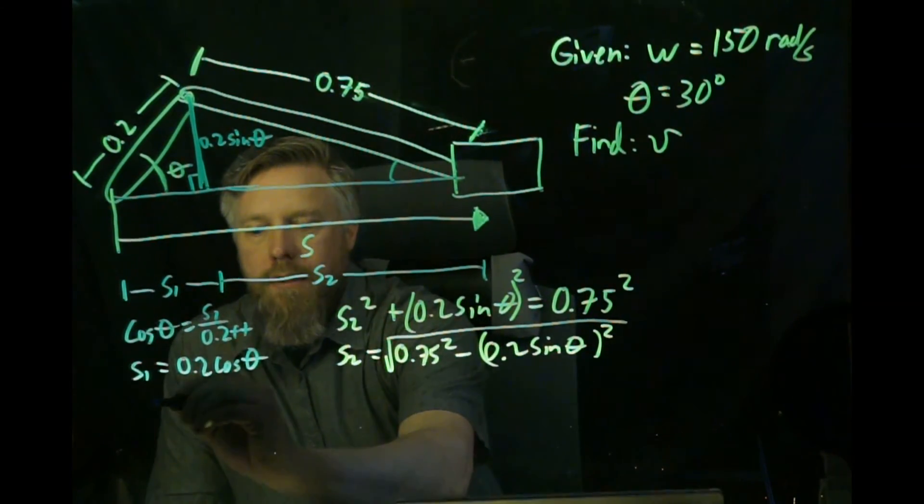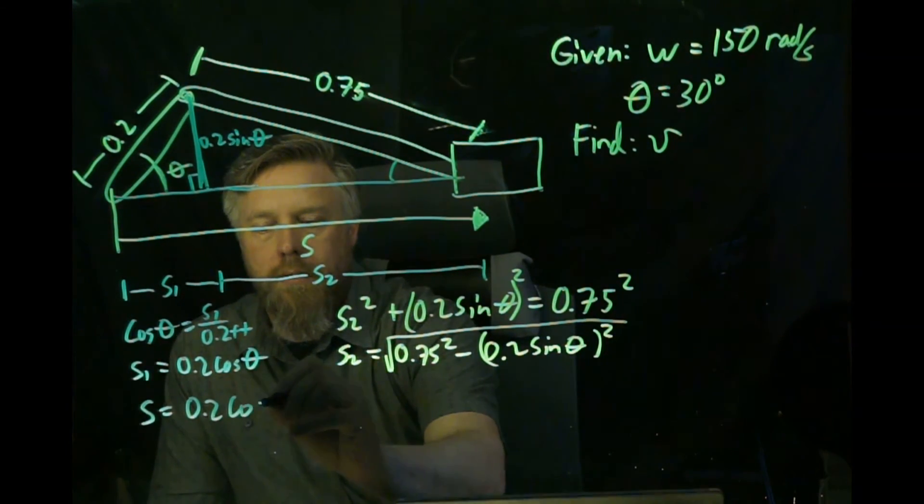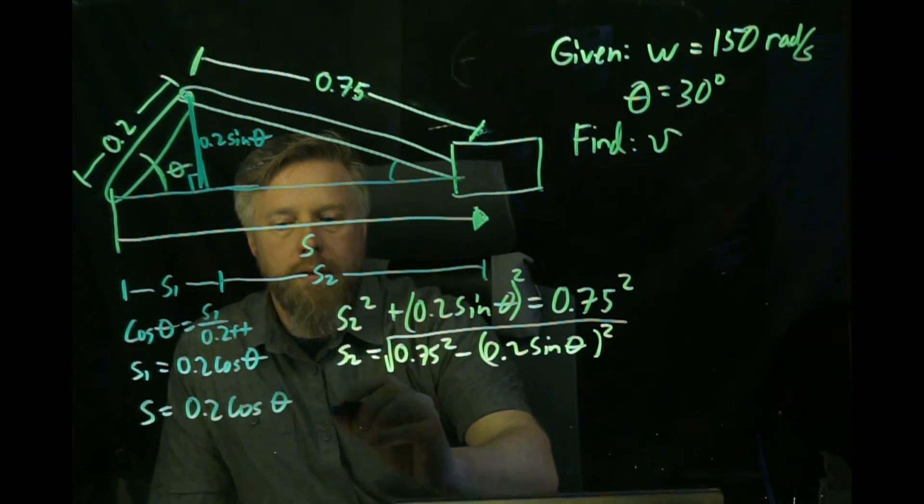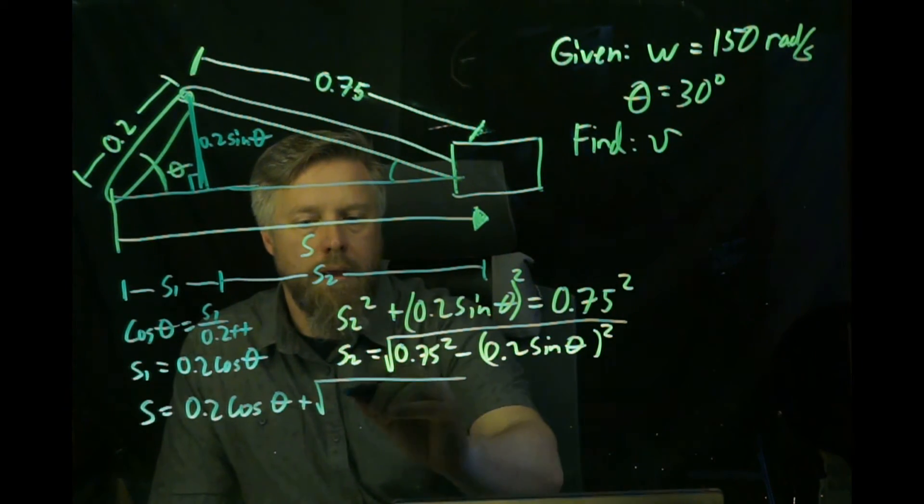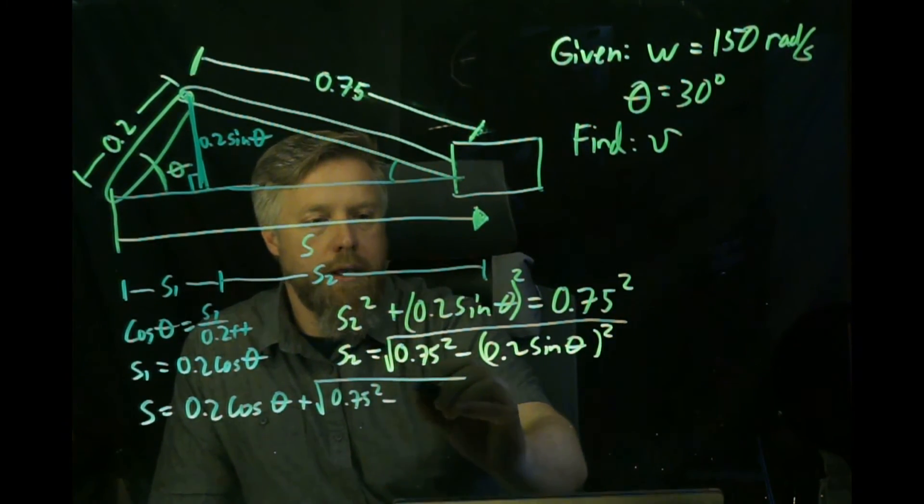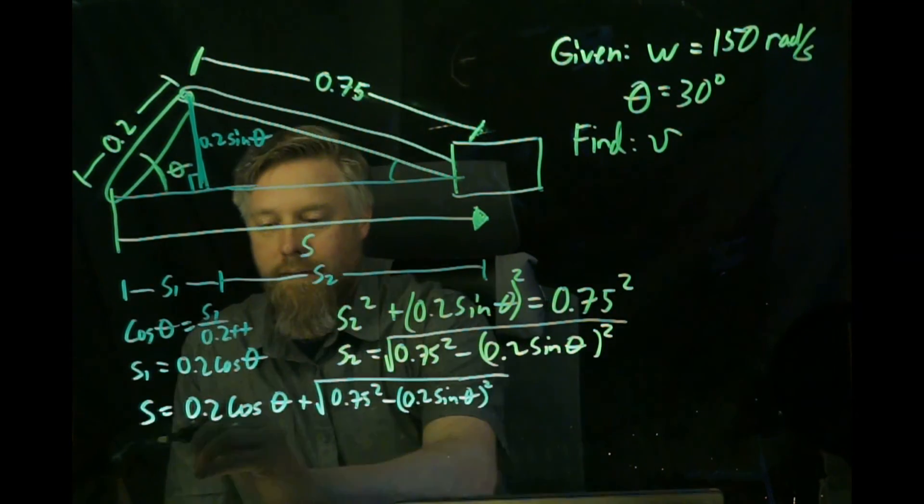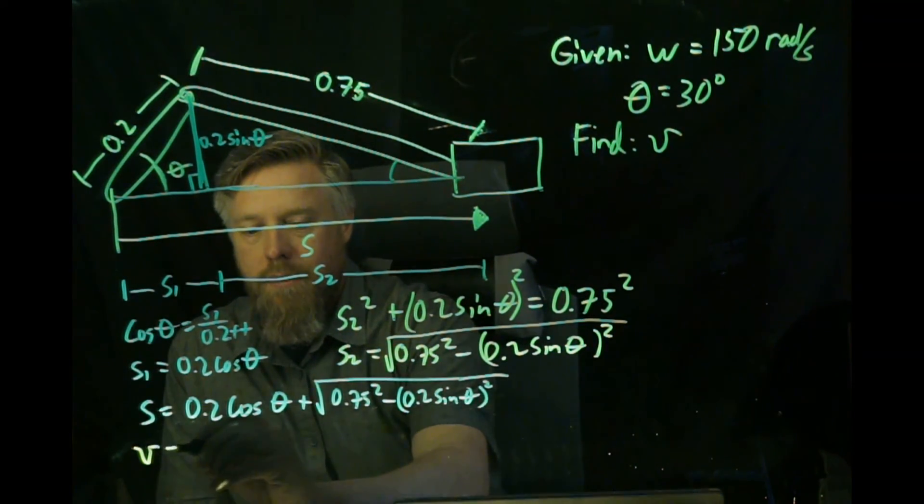So S equals 0.2 cosine theta plus the square root of 0.75 squared minus 0.2 sine theta squared. Take the derivative and we get that V is going to equal...